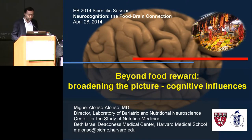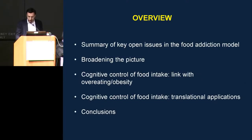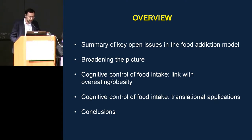The title of my talk is 'Beyond Food Reward: Broadening the Picture and Cognitive Influences.' The overview: first I'll give a summary of what has been covered in this first part of the symposium — key open issues in the food addiction model — then broaden the picture, then talk about cognitive influences and cognitive control of food intake, links with overeating and obesity, translational applications, and a conclusion.